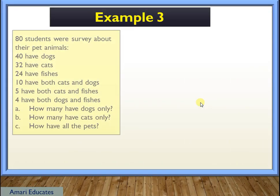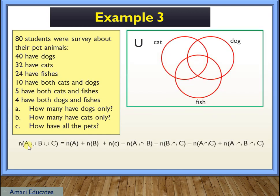Let us continue with our final example. Example 3. 80 students were surveyed about their pet animal. 40 have dogs, 32 have cats, 24 have fishes, 10 have both cats and dogs, 5 both cats and fishes, 4 have both dogs and fishes. Here are the questions. How many have dogs only? How many have cats only? How many have all the pets? Now, there are three groups that we are considering, so the formula we're going to use is the long one. This one.